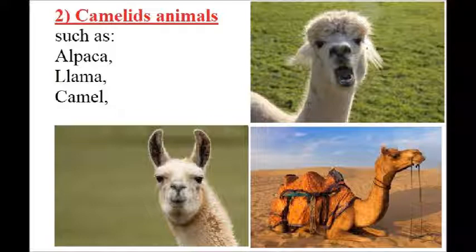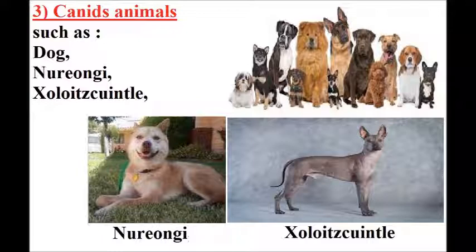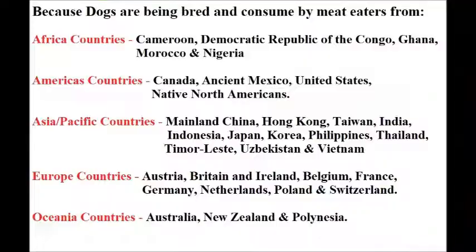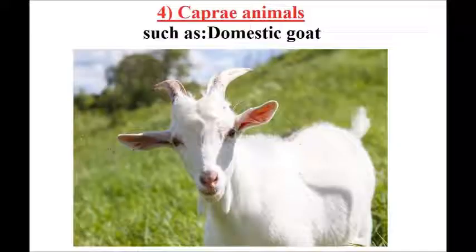3, canid animals such as dog, Nureongi, and Xoloitzcuintle. Because dogs are being bred and consumed by meat-eaters from African countries, American countries, Asia-Pacific countries, European countries, and Oceania countries. 4, caprine animals such as domestic goat.